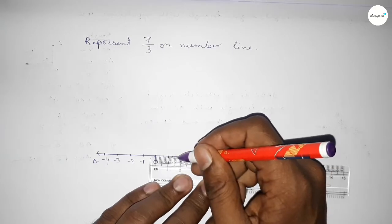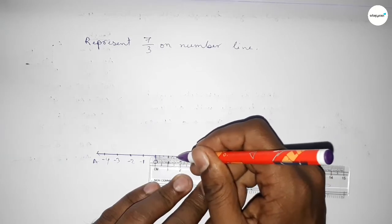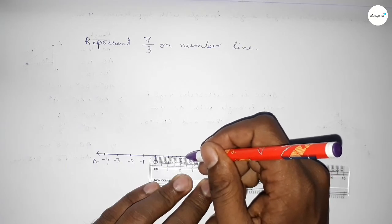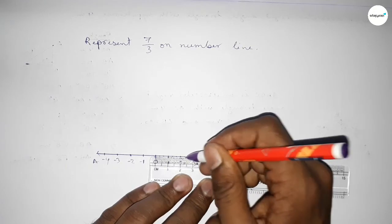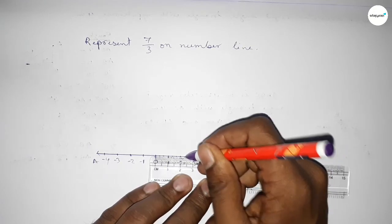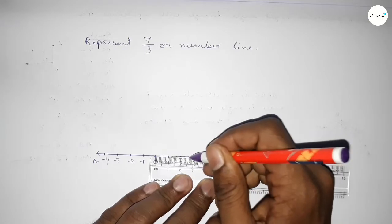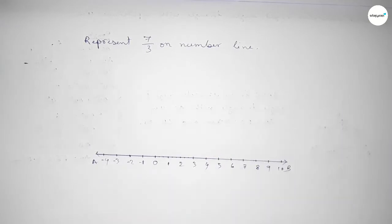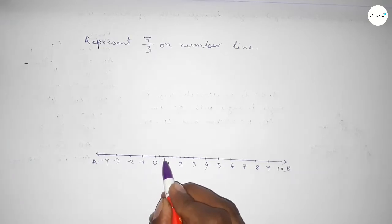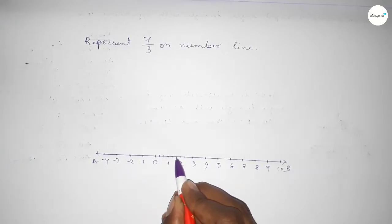So this is 0.3 something and this is 0.6 something approximately. Again dividing the distance between two to three. So this is 0.3 something and this is 0.6 something approximately.